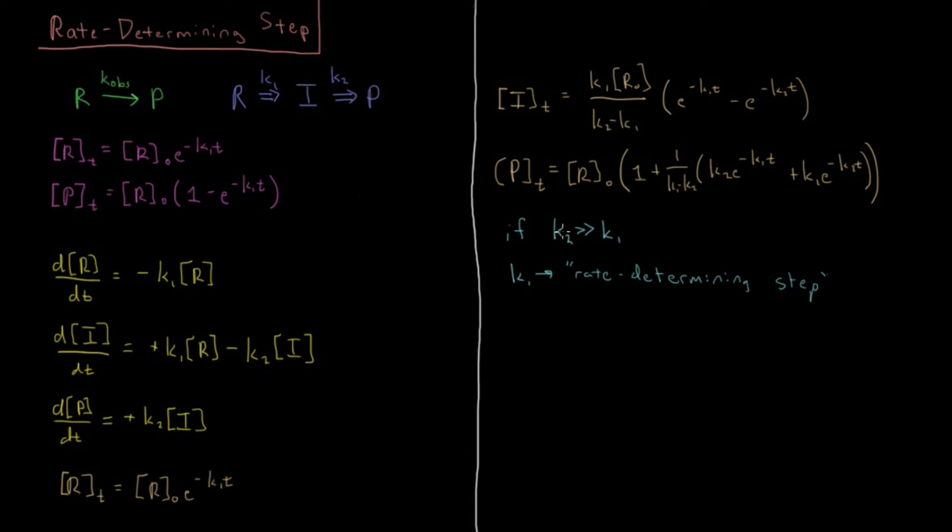So what we're going to call is that k1 is going to be called our rate determining step. So k2 happens much, much faster than k1. So k1 really determines once the intermediate is formed, it's going to react pretty much immediately to form product. So k1 is really going to determine how fast this whole reaction can go.